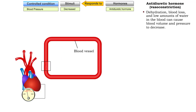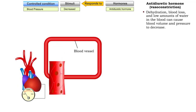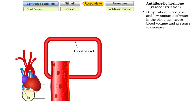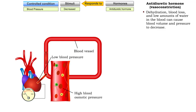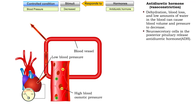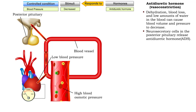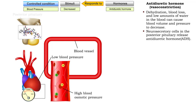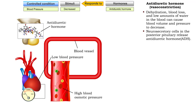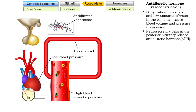Dehydration, blood loss, and low amounts of water in the blood can cause blood volume and pressure to decrease. In response to declining blood volume or elevated blood osmotic pressure, neurosecretory cells in the posterior pituitary release antidiuretic hormone.